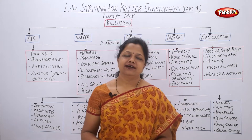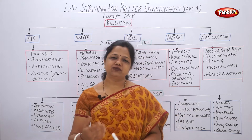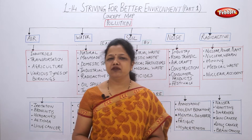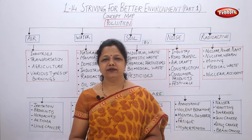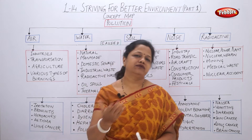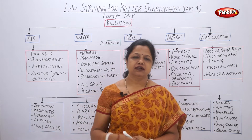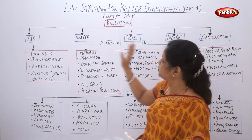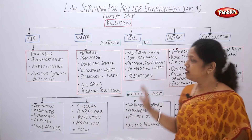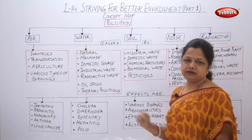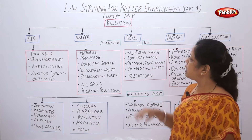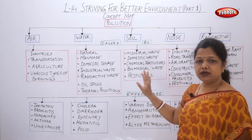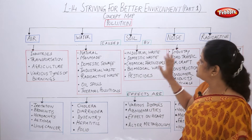Hello students. I had explained you the lesson of EVS, lesson number 14, striving for a better environment. I had explained you different types of pollutions. Now this is a concept map which is going to show you everything in detail in the form of a flowchart. I am going to explain what this flowchart means. It's very easy to understand, just pay attention.